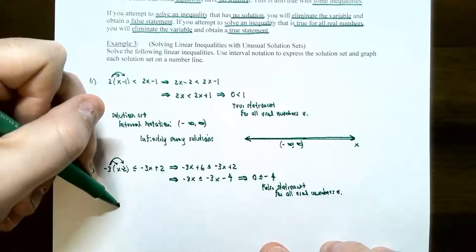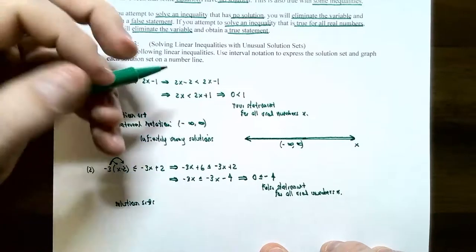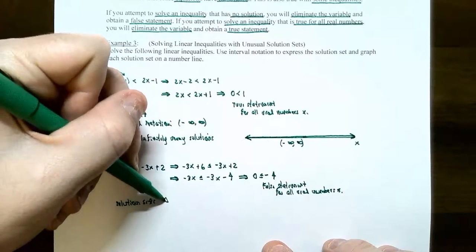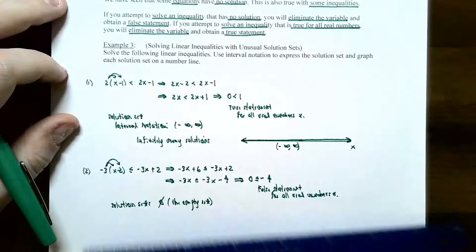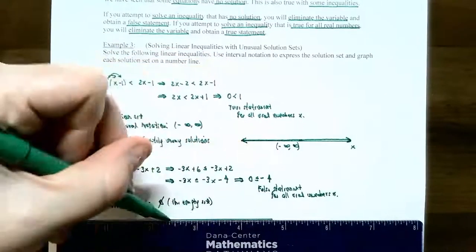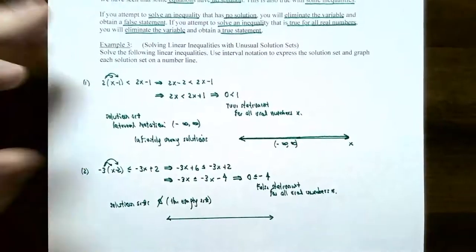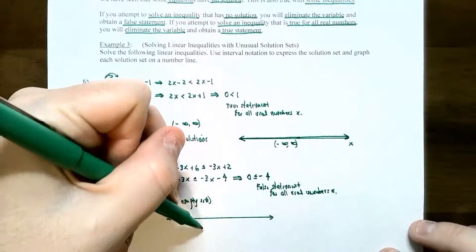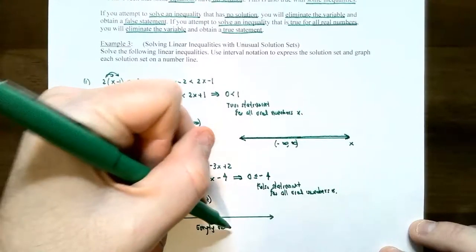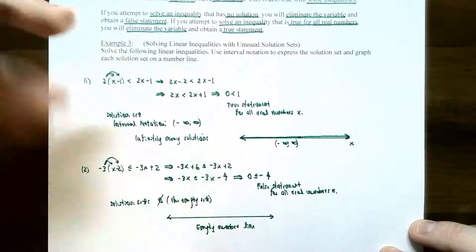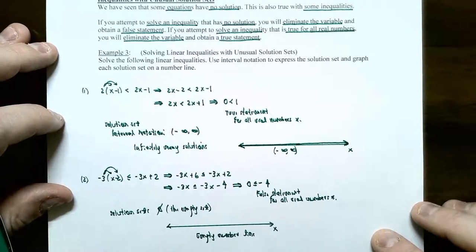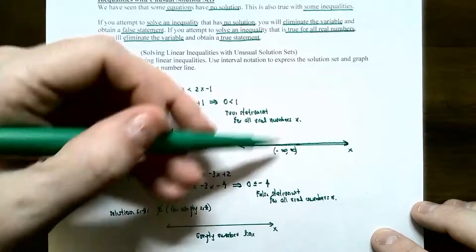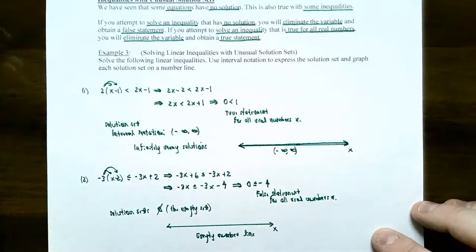So the solution set is what's called the empty set — the solution set is empty. The special notation for the empty set is a zero with a slash through it. On the number line, there would be no tick marks or values placed, and it's an empty number line — no part of the number line is shaded, so there are no solutions. Make sure you check whether the inequality after you cancel out the variables is either true or false: true means all real numbers as a solution, false means no solution.